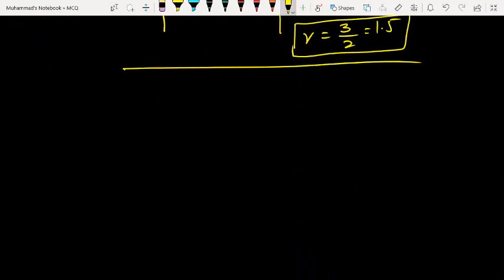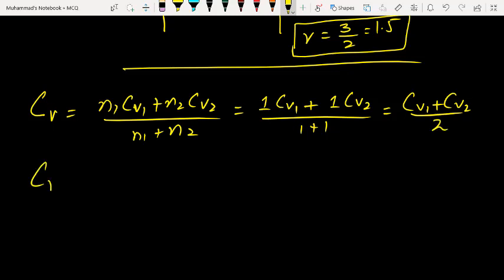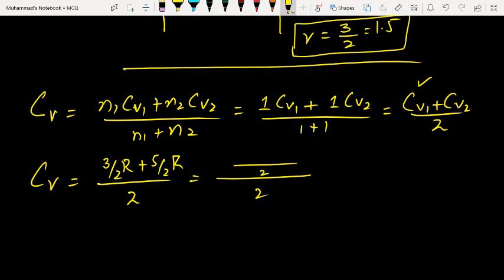Let's start with this method. First of all, we have to find the collective CV: N1Cv1 plus N2Cv2 divided by N1 plus N2. N1 means 1 mole into CV1 plus again 1 mole into CV2 divided by 1 plus 1. So the formula will be CV1 plus CV2 divided by 2. Collective CV equals CV1, which is 3 by 2R, and CV2 is 5 by 2R, divided by 2. If we solve it, 2 LCM will be, and this will be 3R plus 5R. So finally it will be 8R by 4.